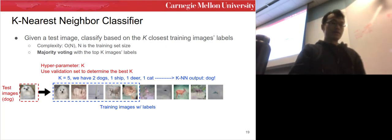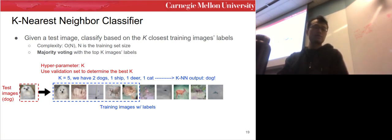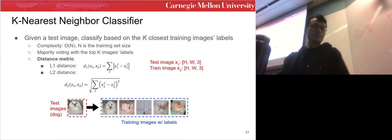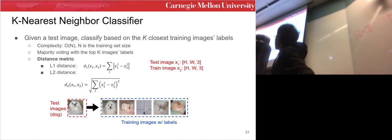The hyperparameter k is selected using the validation set. To compute distance, given two images each as an H×W×3 tensor, you can use L1 distance or L2 distance — these are the two distance metrics commonly used in computer vision. KNN doesn't need any training, but the test complexity is too high; in practical machine learning we want O(1) test-time classification.